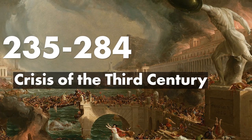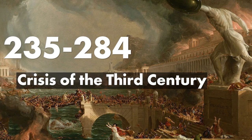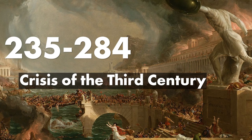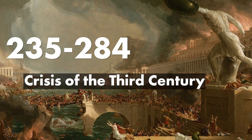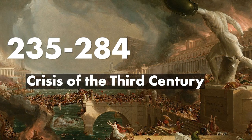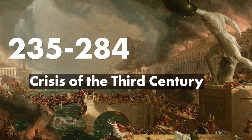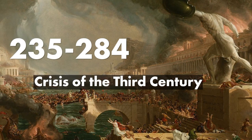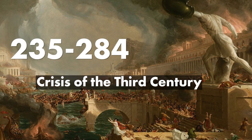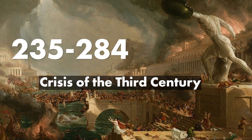Firstly, we have the Crisis of the 3rd Century in CE 235 to 284, also known as the period of military anarchy or the Imperial Crisis. This period began with the assassination of Severus Alexander, who ruled from 222 to 235, by his own troops. That was followed by nearly 50 years of chaos when military leaders wrestled one another for power. Rulers died of unnatural causes, and there were revolts, plagues, fires, and Christian persecutions.